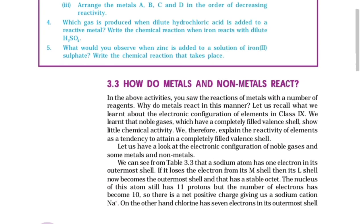Why do metals react in this manner? Let us recall what we learned about electronic configuration in Class 9. Noble gases, which have a completely filled valence shell, show little chemical activity. We therefore explain the reactivity of elements as a tendency to attain a completely filled valence shell. A sodium atom has one electron in its outermost shell. If it loses this electron from its M-shell, its L-shell becomes the outermost shell with a stable octet.